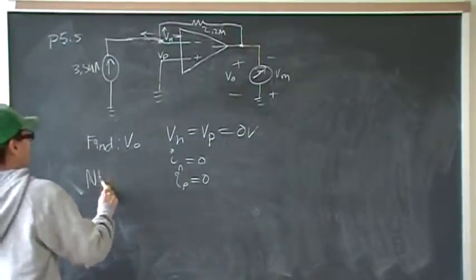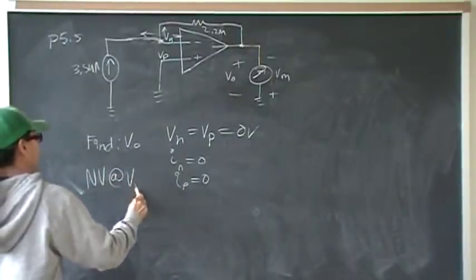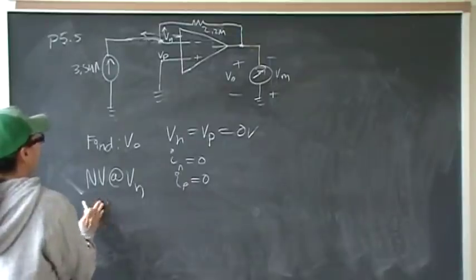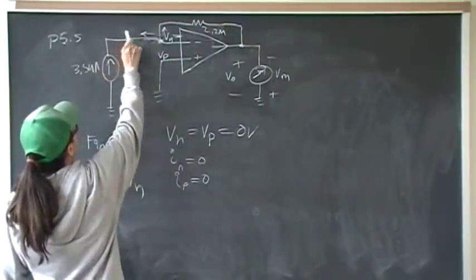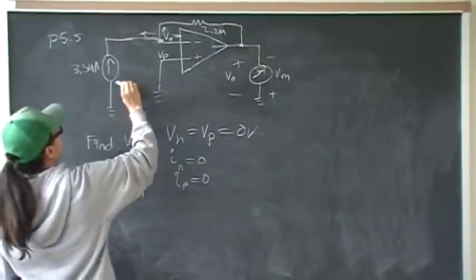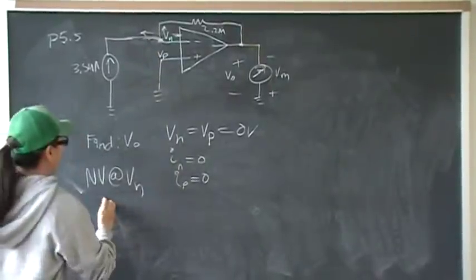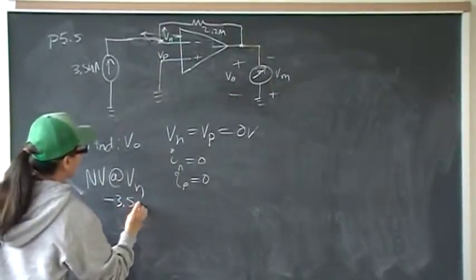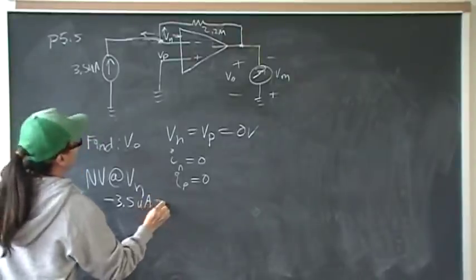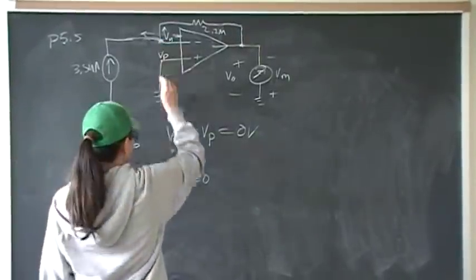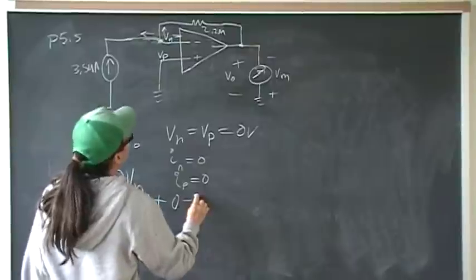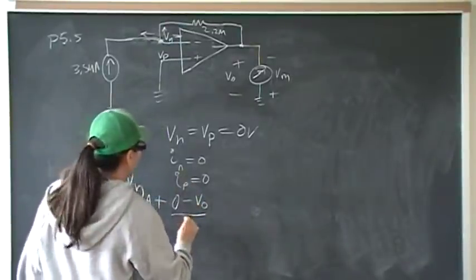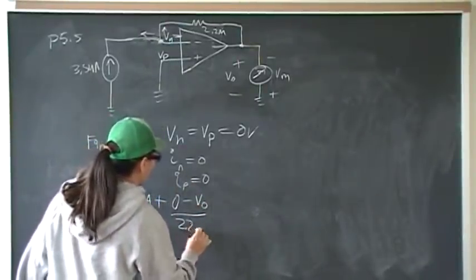Node voltage at Vm means we have a current here. It's a negative current since it's entering the terminal. So negative 3.5 microamps plus 0 volts minus Vout over 2.2 megaohms.